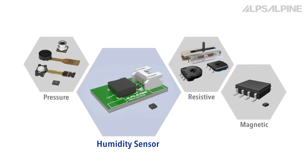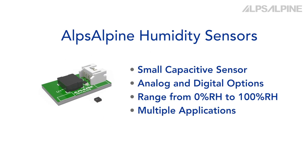AlpsAlpine has a strong reputation for designing and manufacturing high-quality humidity sensors for electronics. We are here to help you understand some of the basic concepts for AlpsAlpine's humidity sensors. AlpsAlpine humidity sensors are small capacitive sensors with both analog and digital output options, with a range of zero to one hundred percent relative humidity detection, and can be used for a variety of applications.